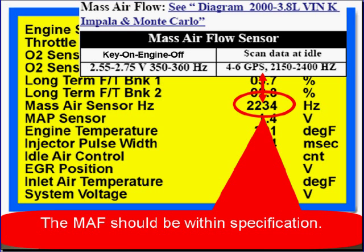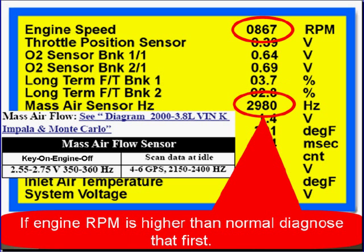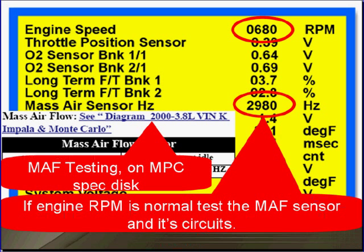The mass airflow should be within specifications. If the MAF reading is higher than normal, check engine RPM. If engine RPM is higher than normal, diagnose that first — look for sticking throttle cables or adjusted throttle stops. If engine RPM is normal, test the MAF sensor and its circuit.